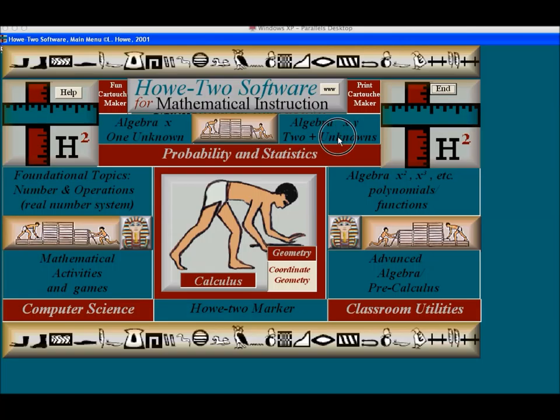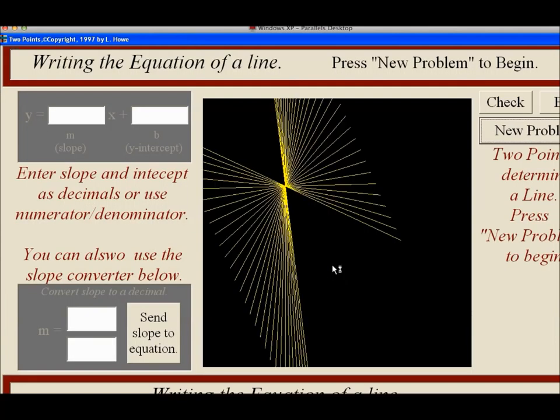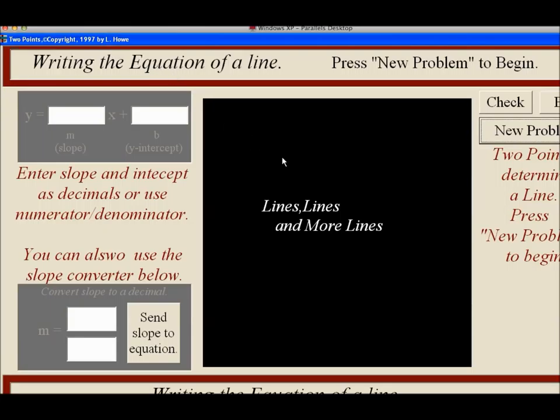One of the early programs I wrote is called Two Points. You can see I've got a DOS sort of introduction. This was written in 1997. It seemed to me one of the most important things we could ask algebra 1 kids to be able to do, and I present the problem this way.